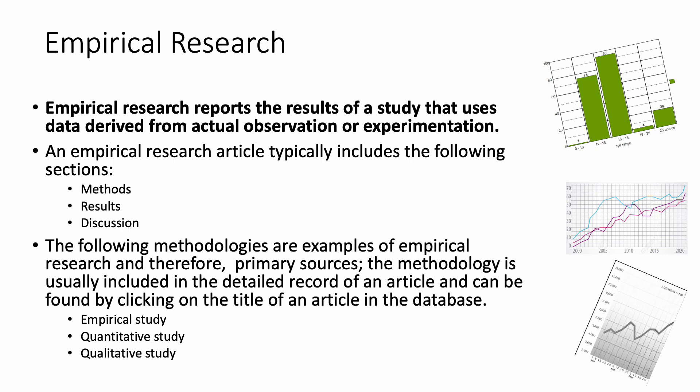An empirical research article typically includes the following sections: the methods section, the results, and the discussion. The following methodologies are examples of empirical research and therefore primary sources. The methodology is usually included in the detailed record of an article and can be found by clicking on the title of an article in the database.